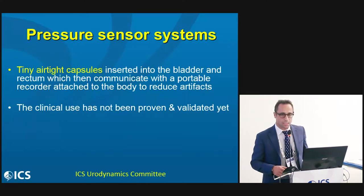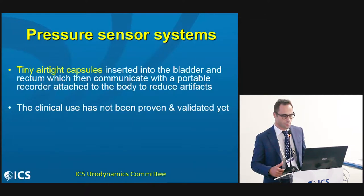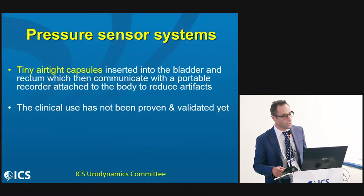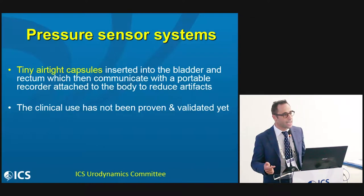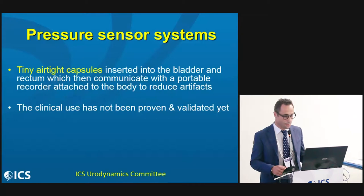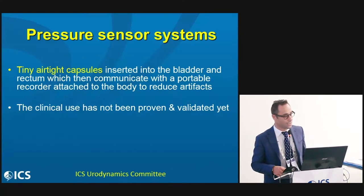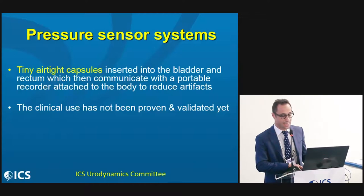Pressure telemetry systems have also been advocated as a possible way to measure and record intra-abdominal and vesical pressure. This may be possible using tiny heart-type capsules inserted into the bladder and rectum, which communicate with a portable recorder attached to the patient's body to reduce artifacts. However, their clinical use has not been proven and validated yet.